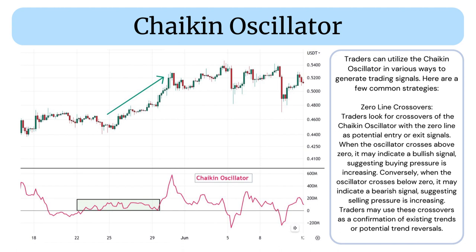Zero-line Crossovers: Traders look for crossovers of the Chaikin Oscillator with the zero-line as potential entry or exit signals. When the oscillator crosses above zero, it may indicate a bullish signal, suggesting buying pressure is increasing. Conversely, when the oscillator crosses below zero, it may indicate a bearish signal, suggesting selling pressure is increasing. Traders may use these crossovers as a confirmation of existing trends or potential trend reversals.